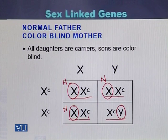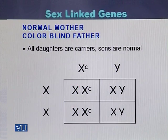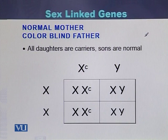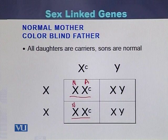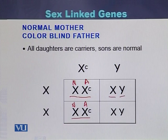In the case where the mother is normal and the father is color blind, all daughters will be carriers and all sons will be normal. Both daughters have one normal allele and one affected allele on their X chromosomes. The sons have one X chromosome and one Y chromosome with no affected allele, so the sons will be normal.